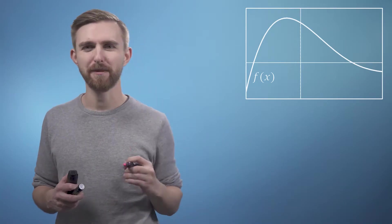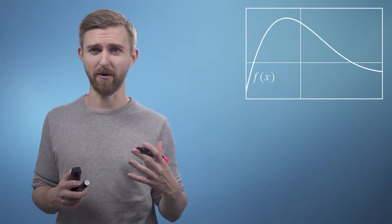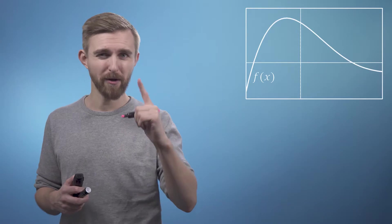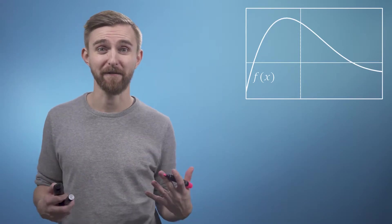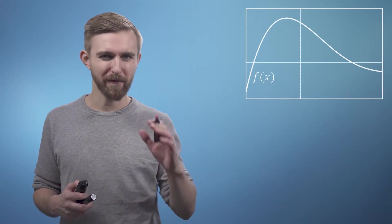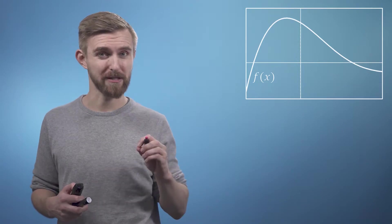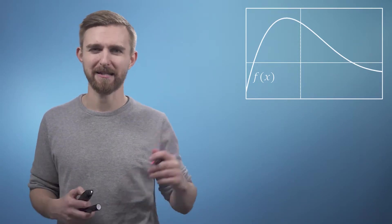So our first approximation, which we can call g0, we're going to build using just one piece of information from our function f of x, which will be the value of the function at our point of interest, which in this case is just x equals 0.